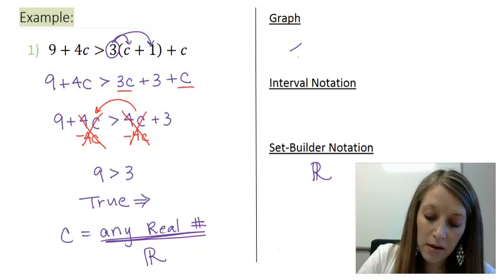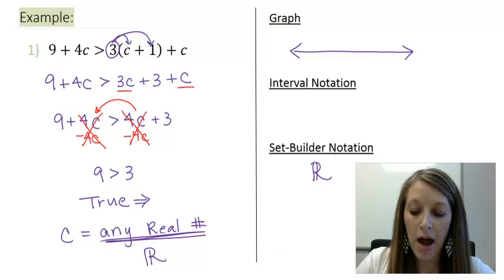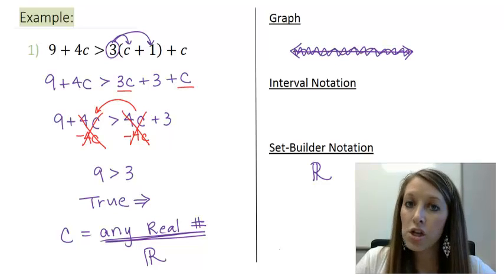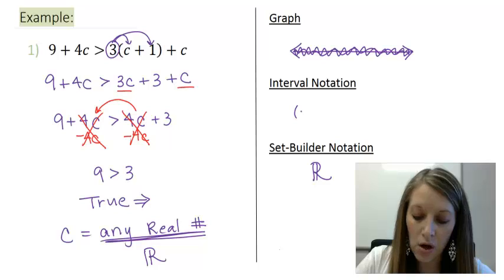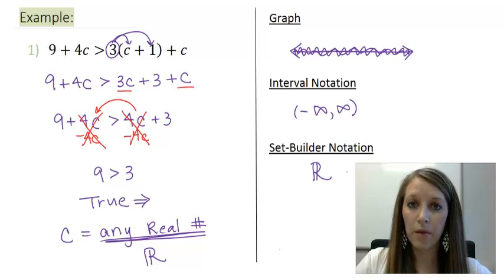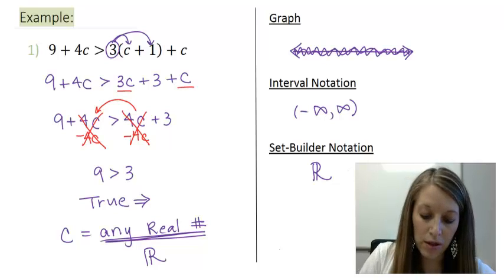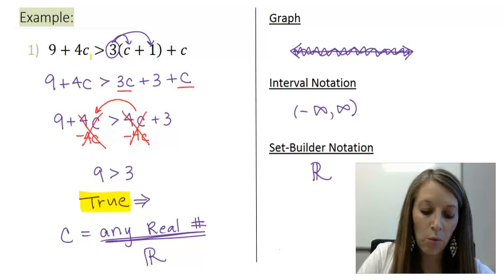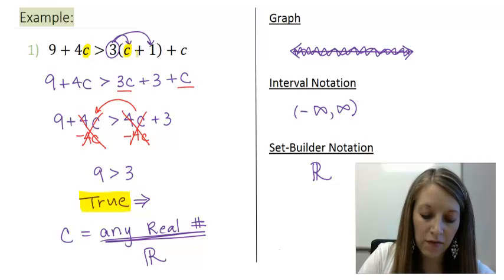So my graph then, I don't need to put any number on my graph because every single number that I can think of will be an acceptable solution to this problem. So my interval notation goes all the way from negative infinity up to positive infinity and everything in between. So this is your first example of a special case when you end up with a true statement, which means any value that you possibly can think of will work to substitute in for c.